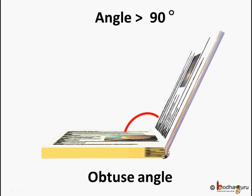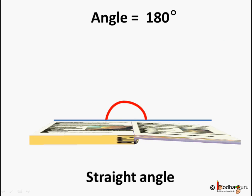Next we further open the book and the angle has increased because the turn has increased. Here the angle is greater than 90 degrees, and we say the angle is an obtuse angle. And here the book is completely open — it is almost equal to 180 degrees. So in a straight angle, the angle is equal to 180 degrees.